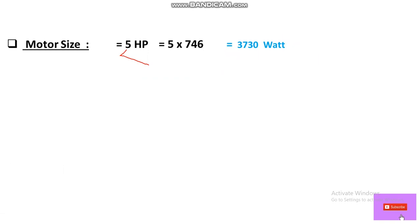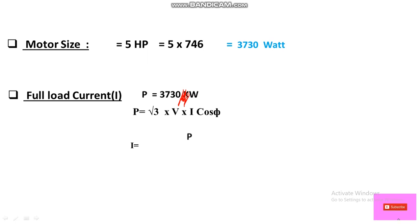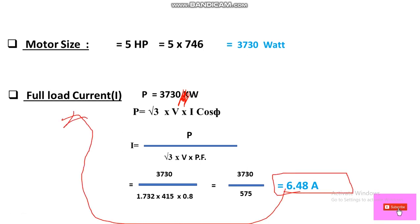Now in step 2, we have to calculate the full load current. The formula for three-phase power is: P = √3 × V × I × cos φ. Rearranging for current: Full Load Current = P ÷ (√3 × V × power factor). Substituting values: 3730 ÷ (1.732 × 415 × 0.8) = 6.48 amperes. So our full load current (FLC) is 6.48 A.